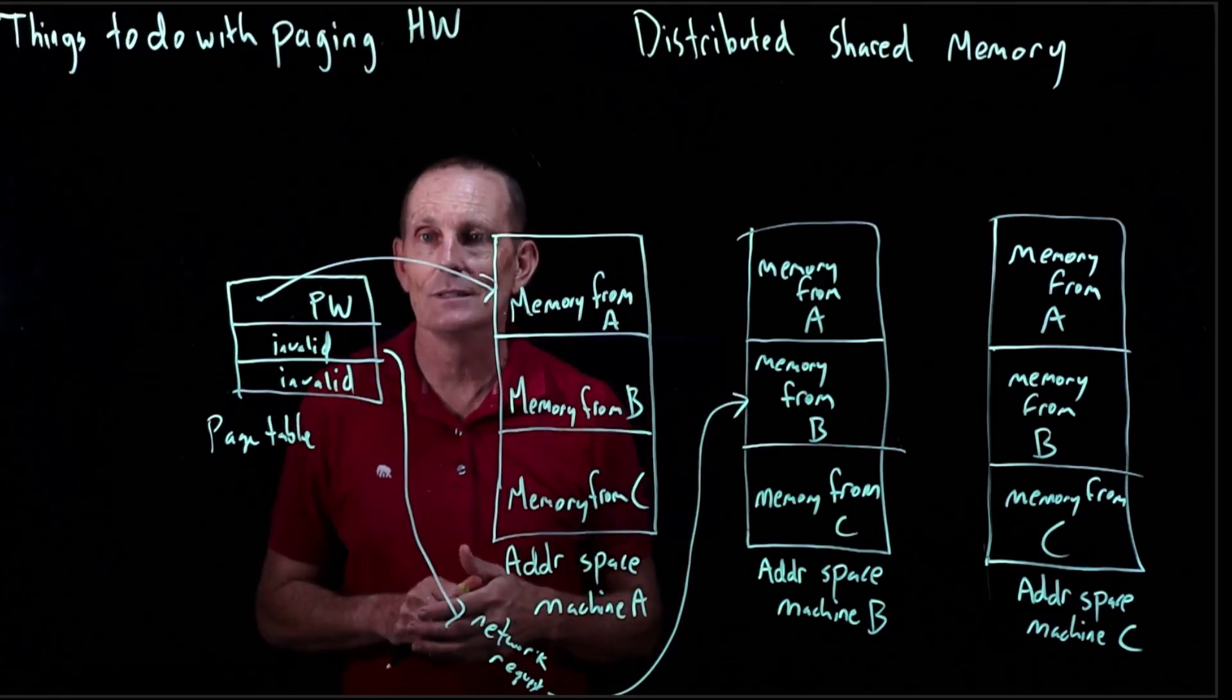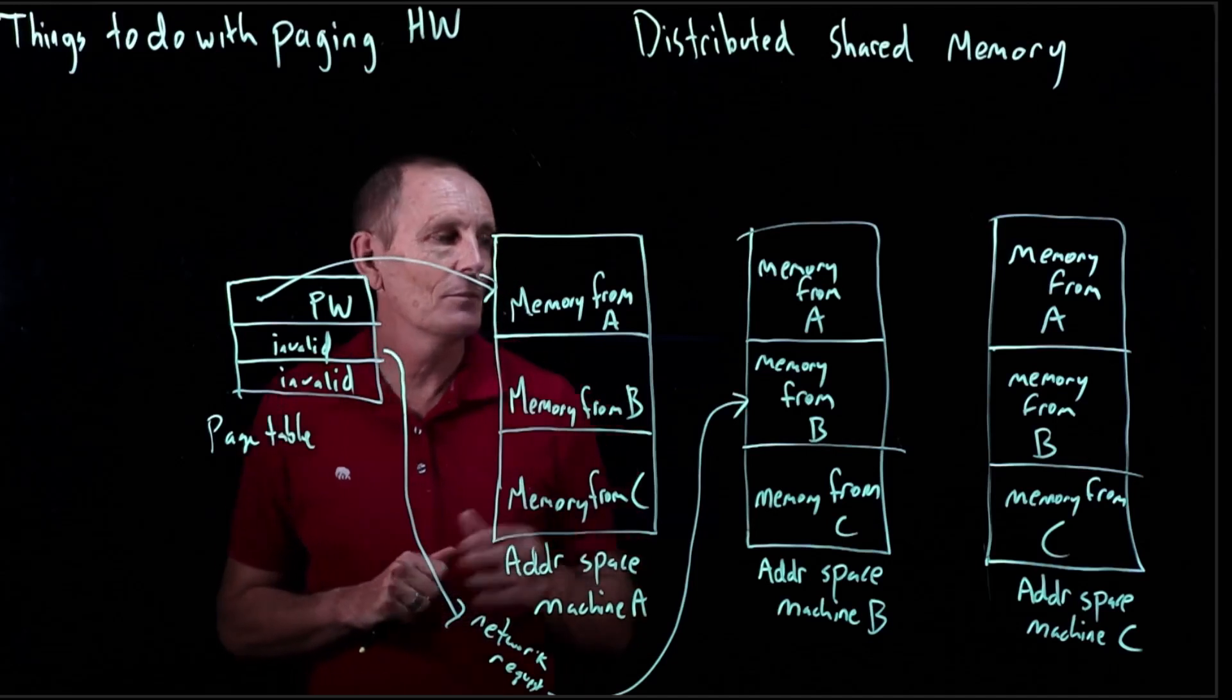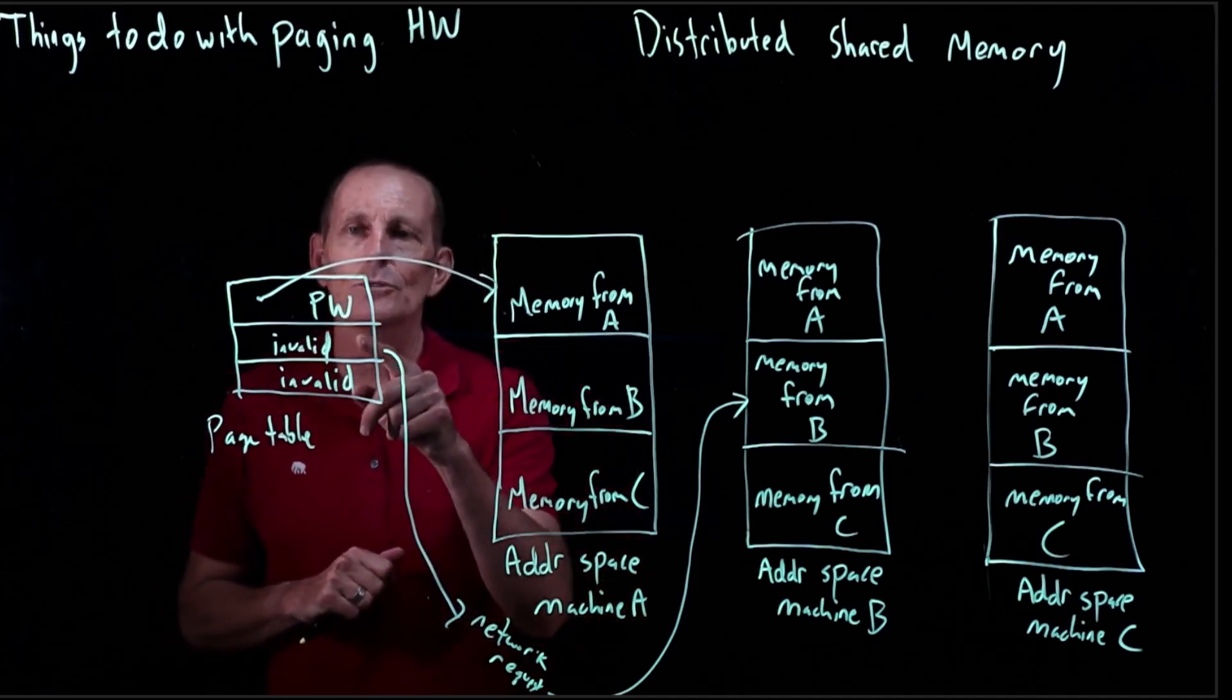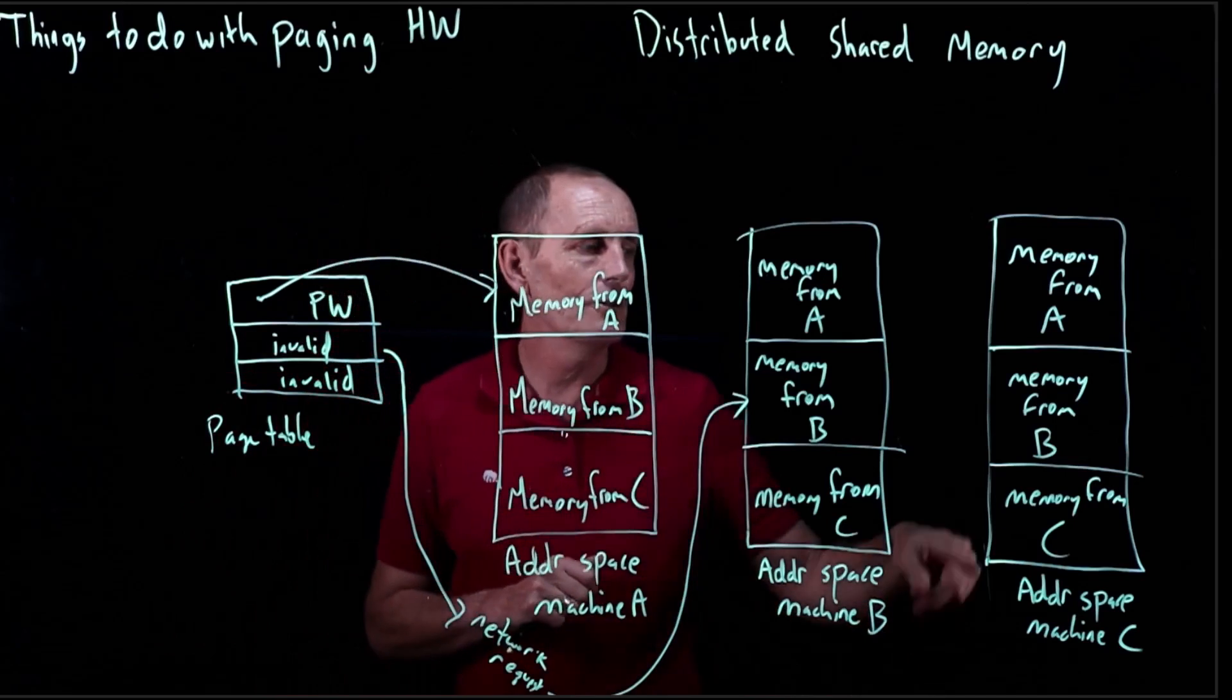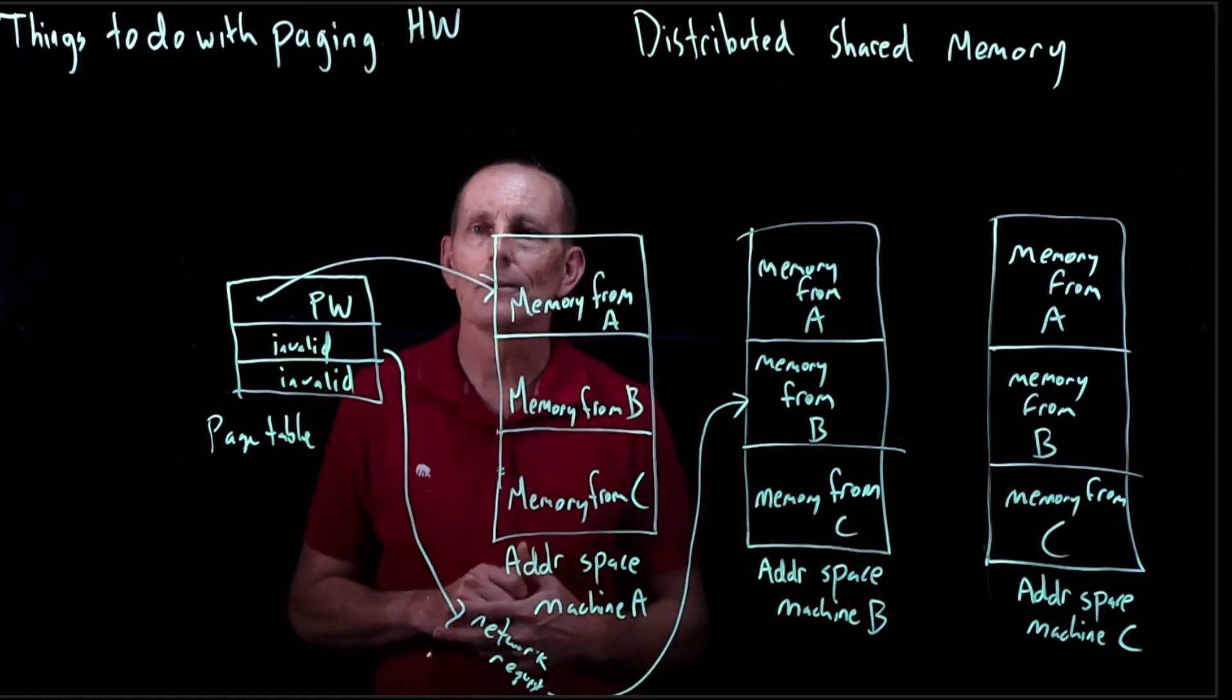Or maybe it just doesn't. I don't know exactly how we're going to do that. But similarly, if A tries to read and write from C, that can cause the kernel to go ahead and do network communication with C to ask to read or write this data.